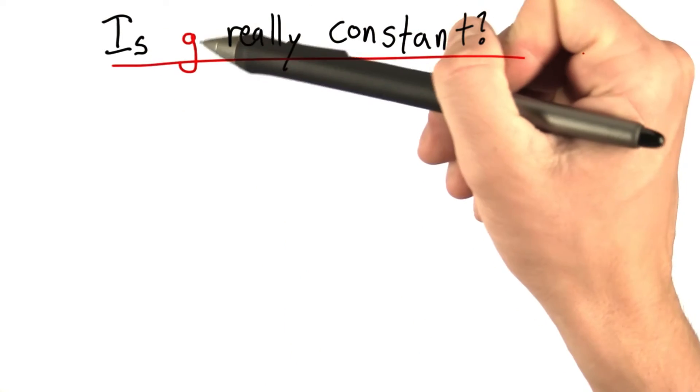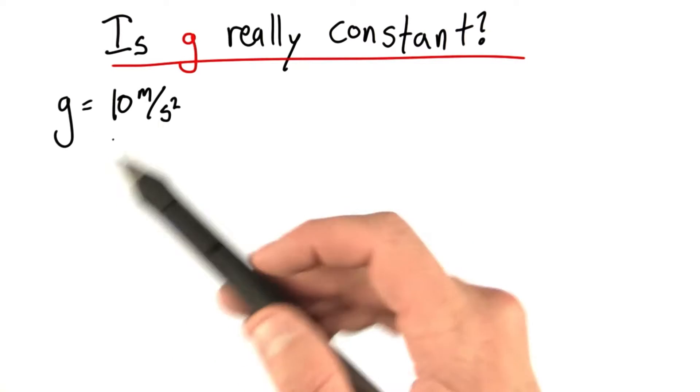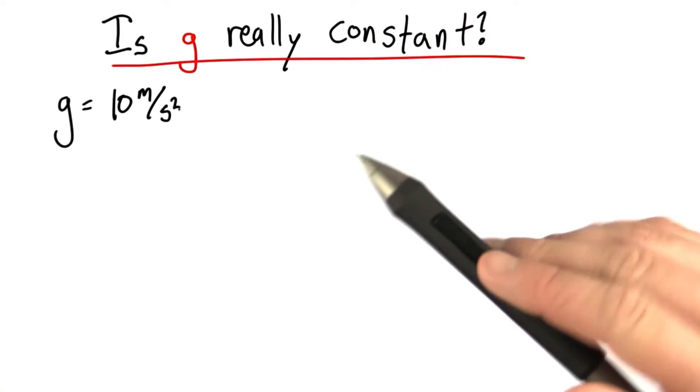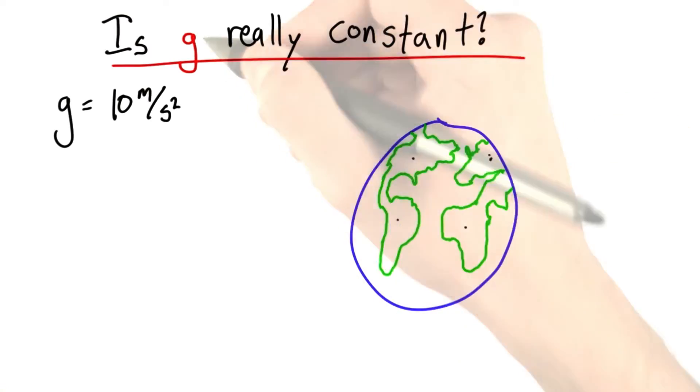In this problem, we're going to probe the acceleration due to gravity. Up till now, we've been saying that this acceleration is just 10 meters per second squared anywhere on the earth. We've been assuming it didn't matter if you were here or here or here or there. Little g was equal to 10 meters per second squared.